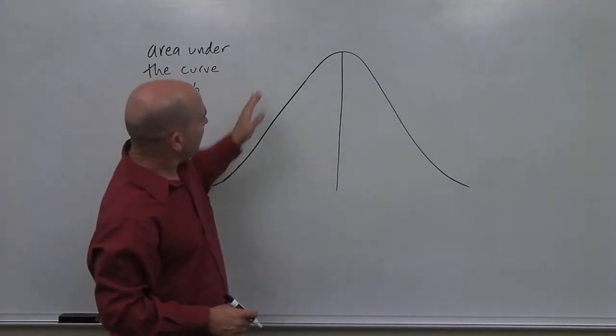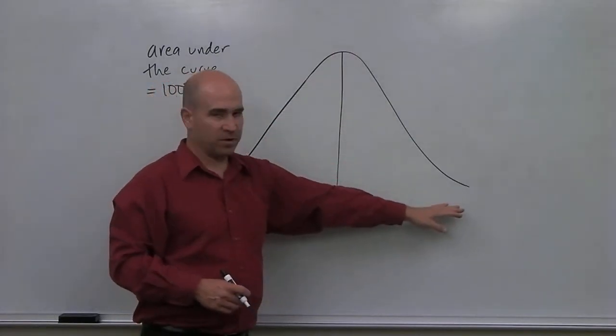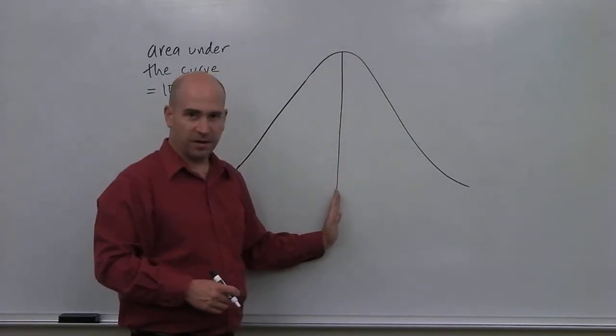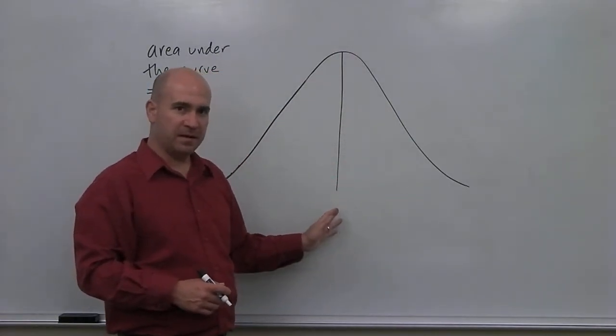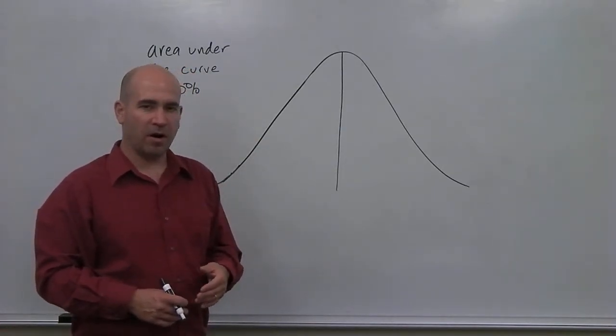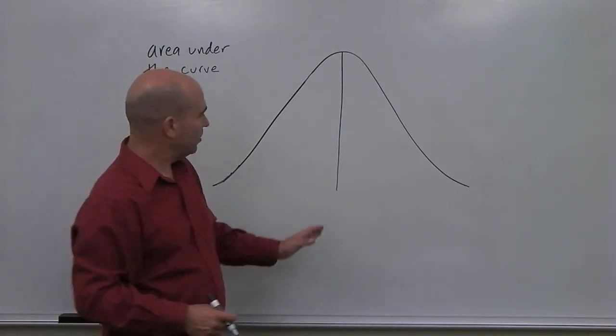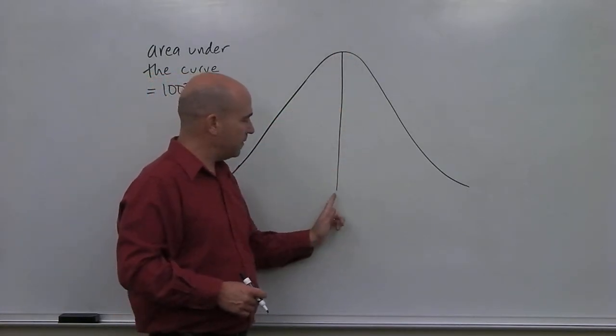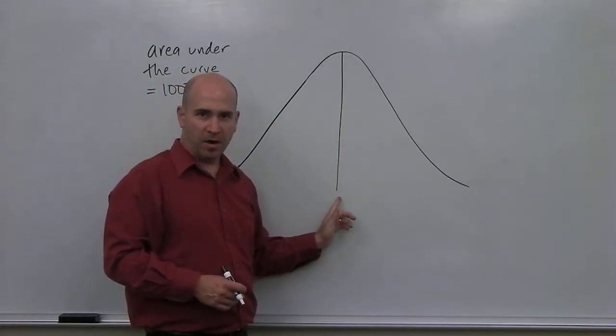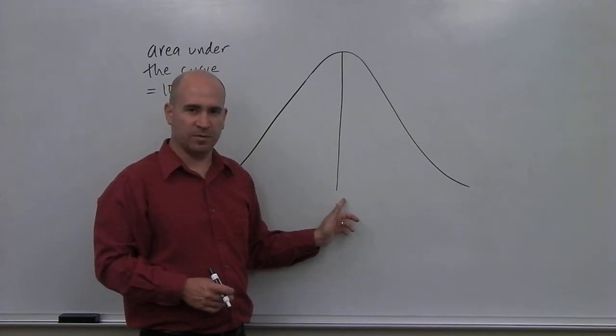And in a normal distribution or normal curve, at the center here, recall that the mean, the median, and the mode are all equal to each other. So the center here, the mean, the median, and the mode all have this value in a normal distribution.